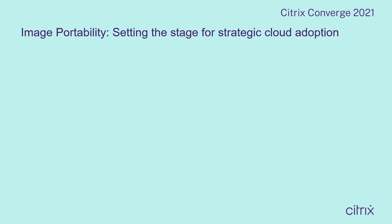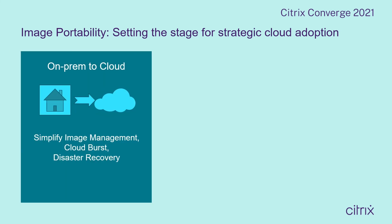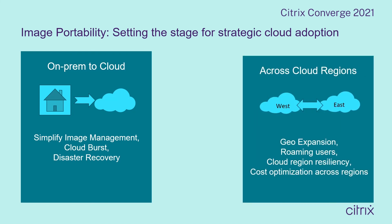The image portability service is going to set the stage for strategic cloud adoption — with on-premises to cloud migration to simplify image management, cloud burst and disaster recovery, and across cloud regions for geo expansion, roaming users, cloud region resiliency, and cost optimization across regions.